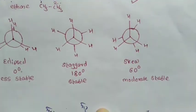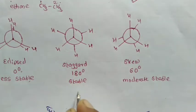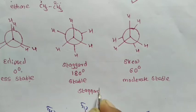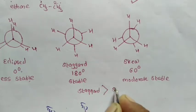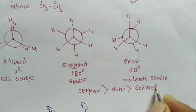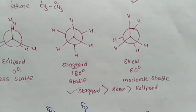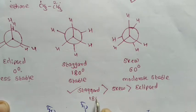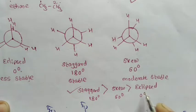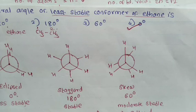The stability order of ethane conformers is: staggered (most stable) > skew (moderate) > eclipsed (least stable). Dihedral angles: staggered = 180°, skew = 60°, eclipsed = 0°. The correct answer is 0 degrees — the dihedral angle of the least stable (eclipsed) conformer of ethane.